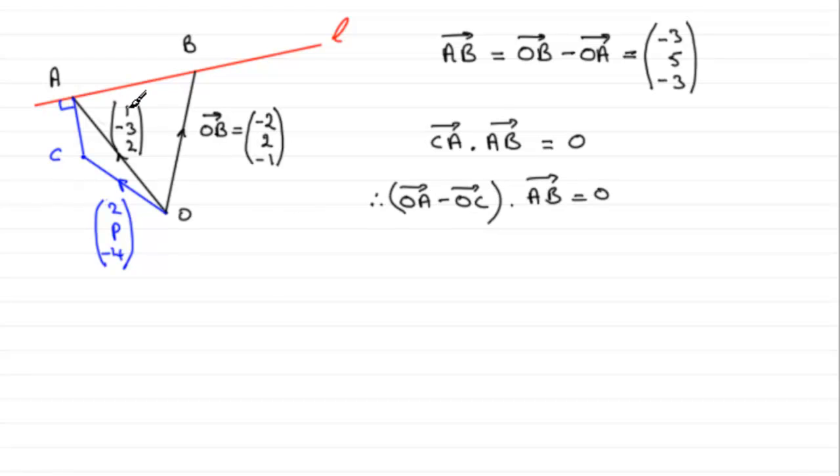So O to A minus O to C. What's that going to be? Well, if we start with the vector O to A, one minus three, two, and then we subtract this vector, two P minus four, we're going to get one minus two, which is going to be minus one. And then you've got minus three minus P. So that's minus three minus P. And then finally, two minus minus four. So it's going to be two plus four, which is six. So there's our vector C to A.